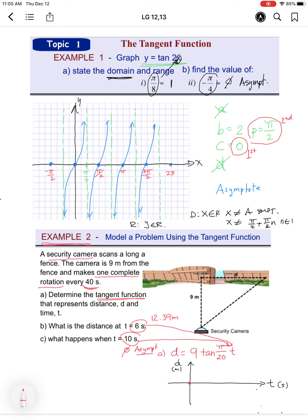First, we know it starts at zero because there's no phase shift, so I put a dot at zero. It has a period of 20—the rotation was 40 seconds for a complete rotation, and a tan wave is half of that. So there's another dot here.